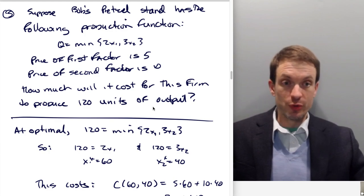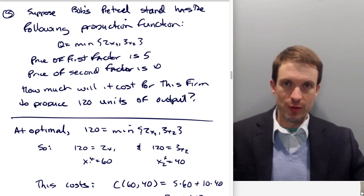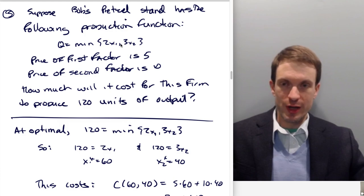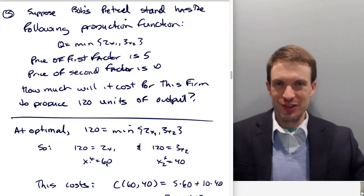Okay, well, just as we saw before, at the optimal, 120 is going to have to be equal to two times our use of input one, and 120 has to be equal to three times our use of factor two. Right, so I wrote this out 120 is equal to 2x1, or we have to use 60 units of x1. And 120 is equal to 3x2, or we have to use 40 units of x2.